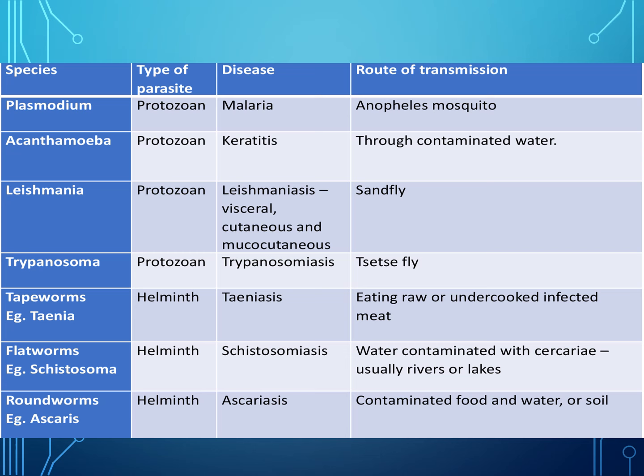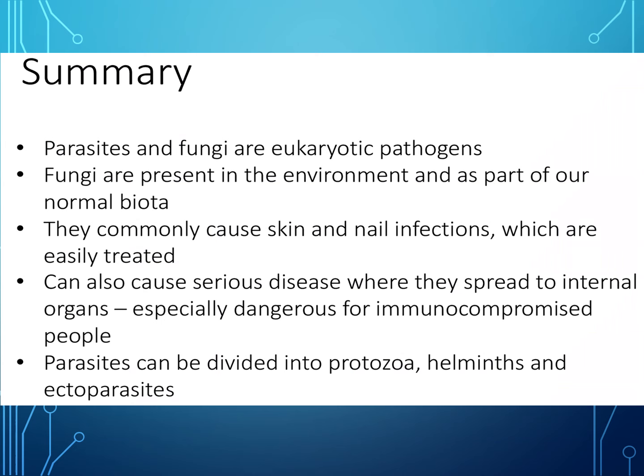Looking at specific species: Plasmodium (protozoan) causes malaria via mosquito bite; Acanthamoeba (protozoan) causes keratitis via contaminated water; Leishmania occurs via sandfly; Trypanosoma causes trypanosomiasis via the tsetse fly; Taenia tapeworms cause taeniasis via eating raw or undercooked infected meat; flatworms such as Schistosoma (a helminth) occur via water contaminated with cercariae, usually in rivers or lakes; and roundworm Ascaris causes ascariasis via contaminated food, water, or soil.